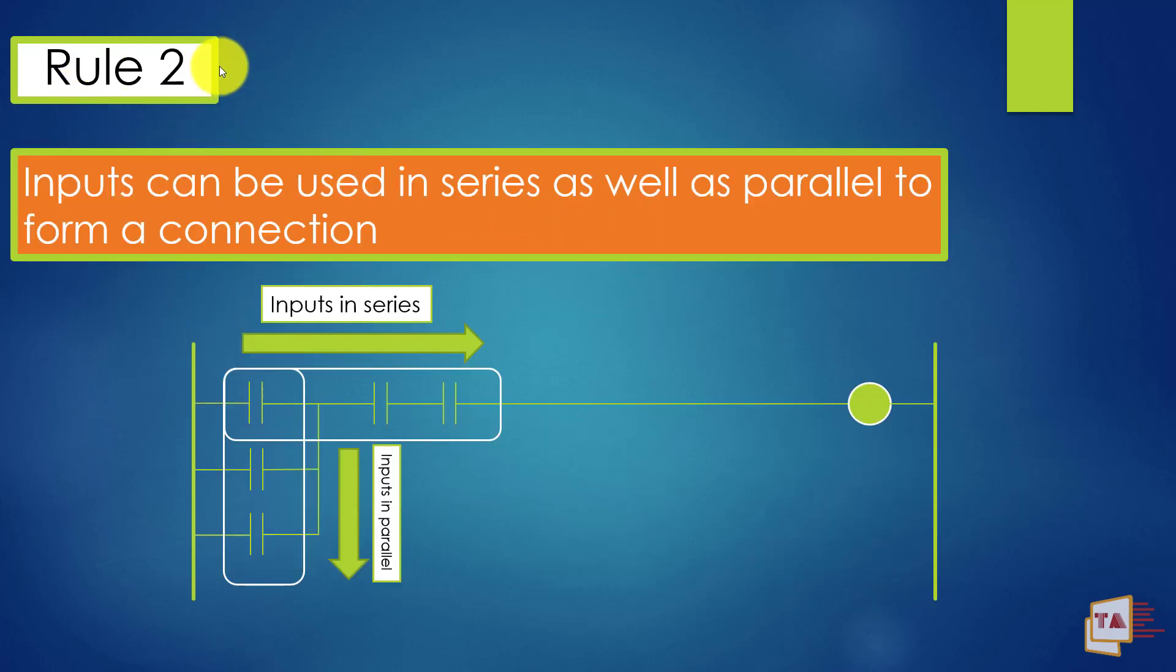Next rule number two: inputs can be used in series as well as parallel to form a connection. If you want to form a connection, then you can use the input in series and parallel also. See, it's the example. This is the inputs. We are making the inputs in series and parallel. This is the output coil. So rule number two represents inputs in series and inputs in parallel. We can use it as series and parallel also.